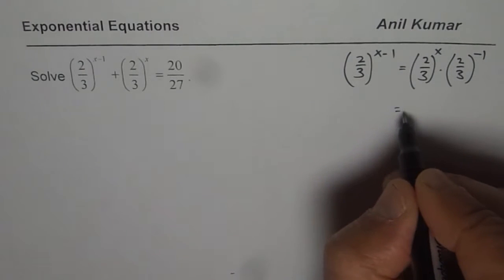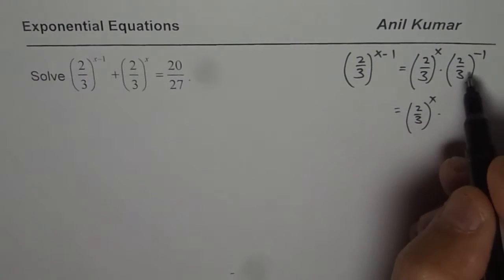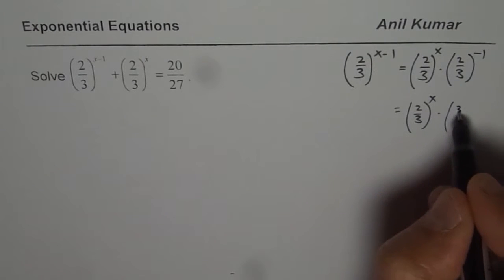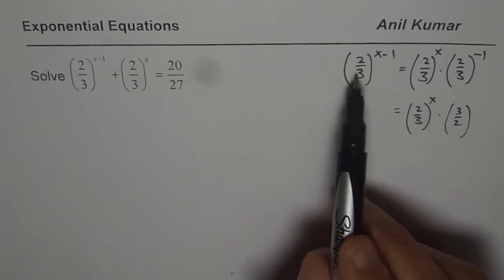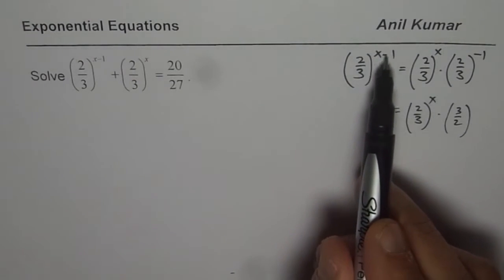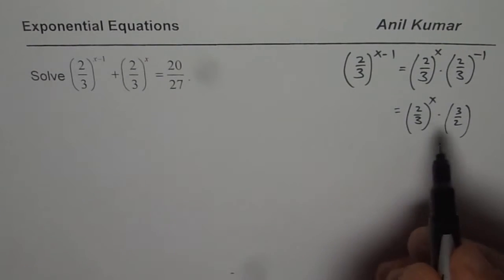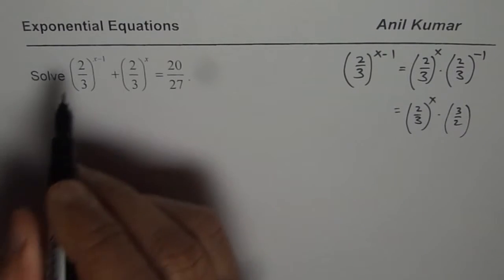So when I have minus, it means what? It means it is 2 over 3 to the power of x times, you flip it, right? So it is 3 over 2 to the power of 1 or just 3 over 2. So 2 over 3 to the power of x minus 1 is really equals to 2 over 3 to the power of x times 3 over 2.